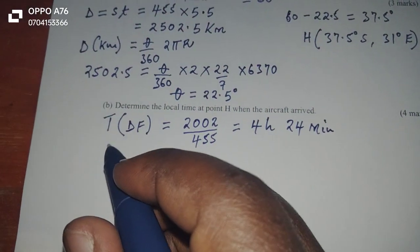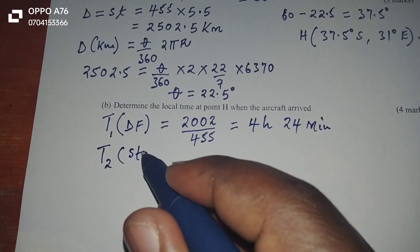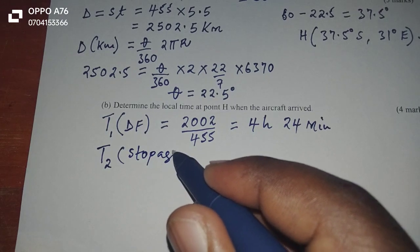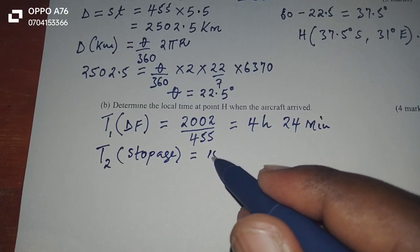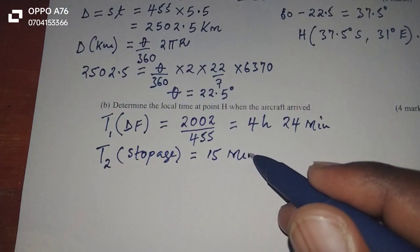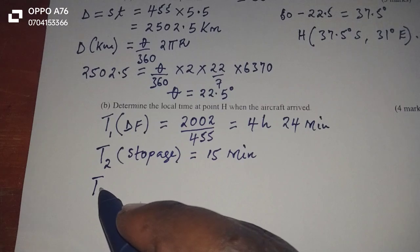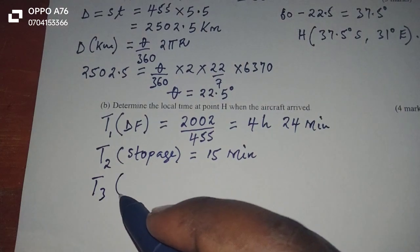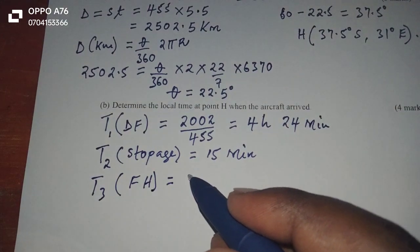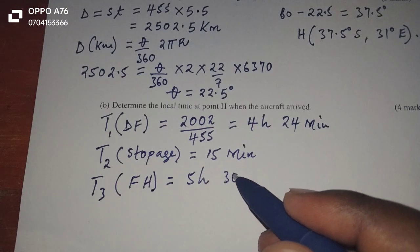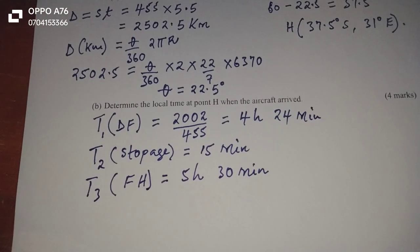There is also a stopover of 15 minutes. Then there is the time from F to point H, which is 5 hours 30 minutes. These make up the total time taken for the journey.